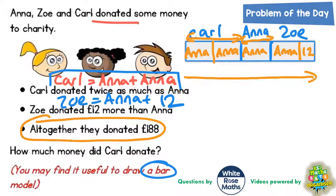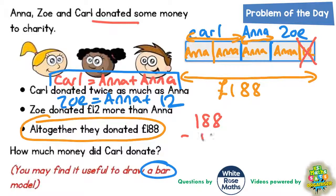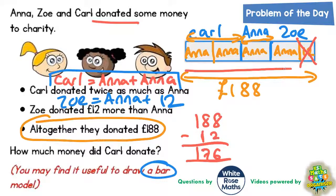This entire bar altogether is worth £188. But we've got that £12 on the end, so we take it off: £188 take away £12. £8 take away £2 is £6, £8 take away £1 is £7, £1 take away £0 is £1. So the rest of the bar is worth £176.